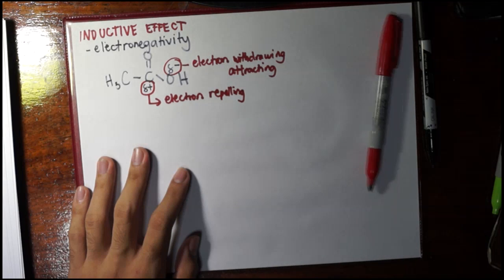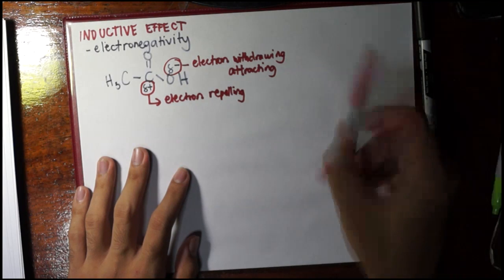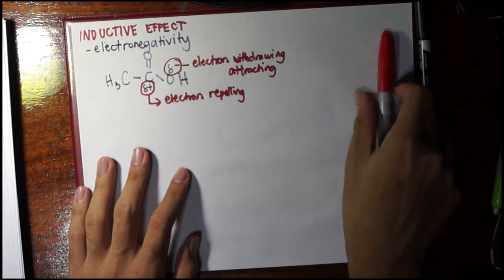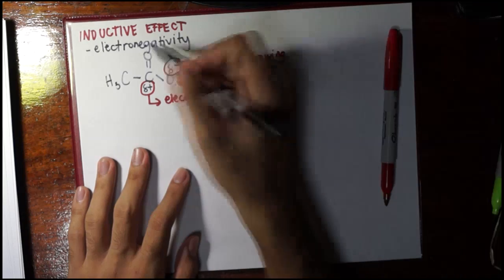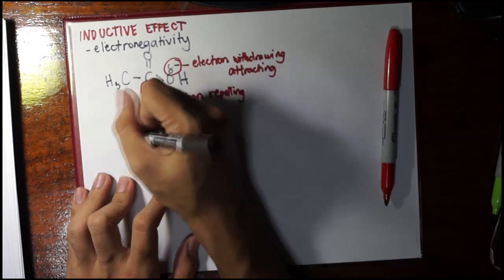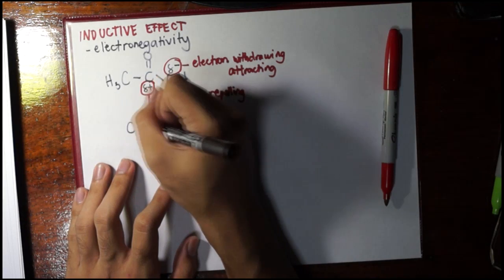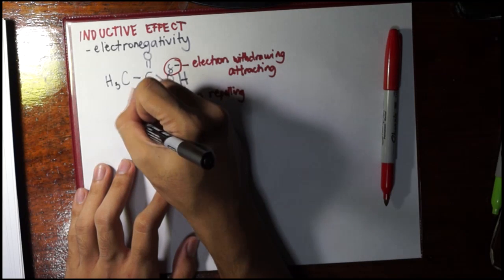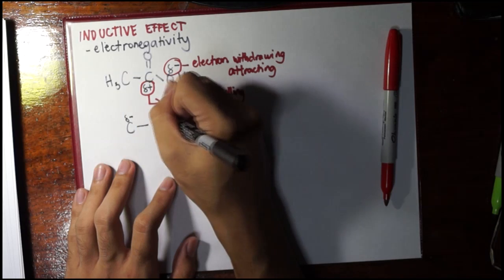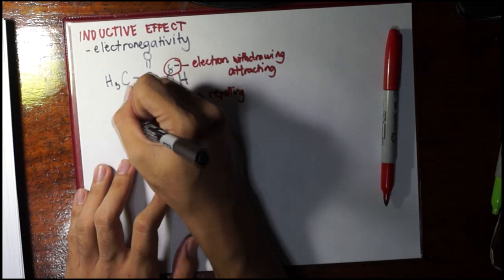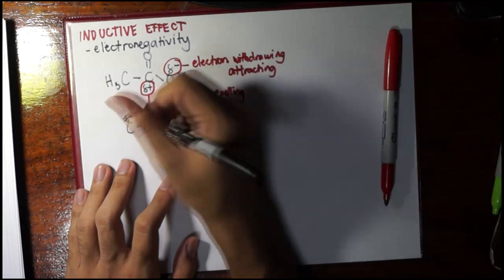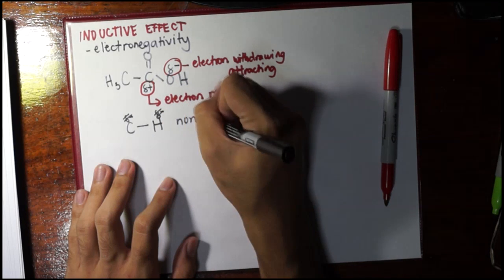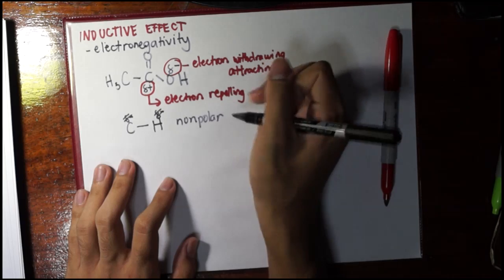Here we just see that this is a relative property. For example, I have a CH bond. Since carbon is more electronegative than hydrogen, there are really no charges to speak of because this is a non-polar bond.